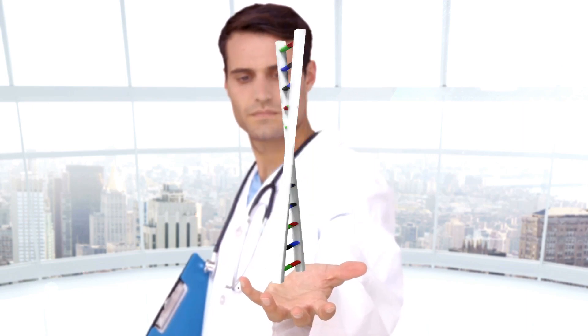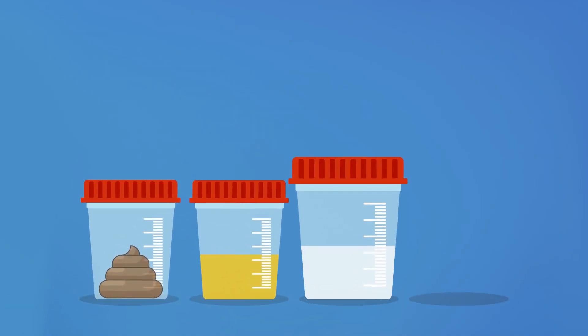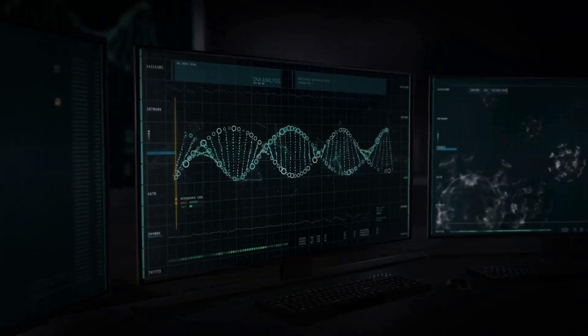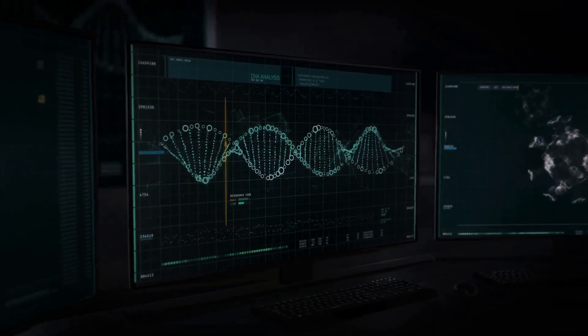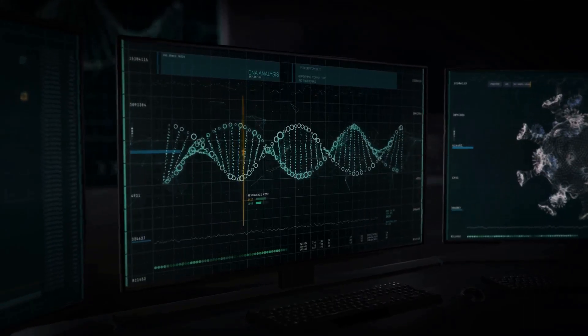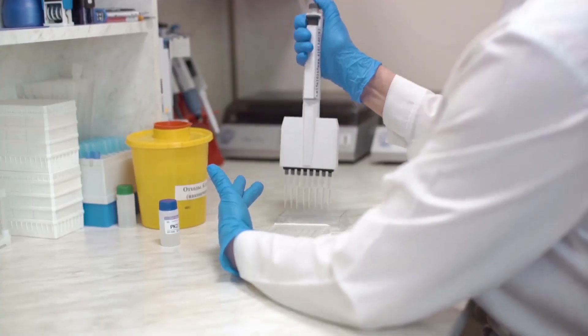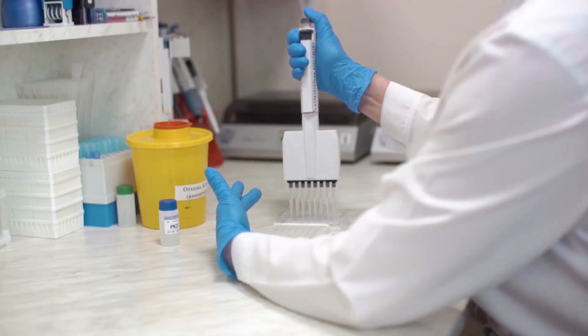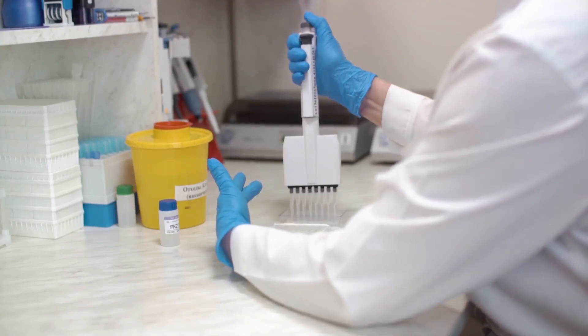This revolutionary test uses a strip of paper, not unlike those used in a home pregnancy test. But instead of detecting hormones, this strip is designed to analyze urine samples for specific DNA barcodes. These barcodes are unique to cancerous proteins, and their presence can indicate if a tumor has metastasized.